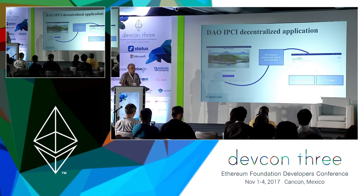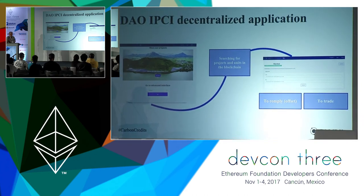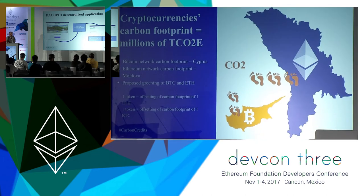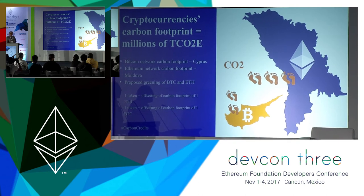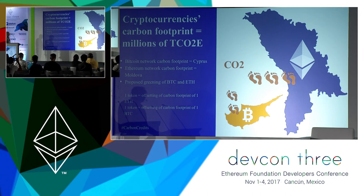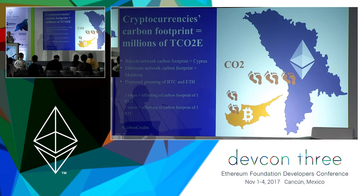Right now you can enter the decentralized application to trade, retire, or offset your carbon footprint, or launch your own program. As you know, cryptocurrencies also have a significant carbon footprint. For example, the Bitcoin network's carbon emissions equal those of Cyprus, and the Ethereum network's emissions, while smaller, still equal the annual emissions of Moldova. So it's easy to imagine a token proposed to offset the exact emissions related to one Bitcoin or one Ether.